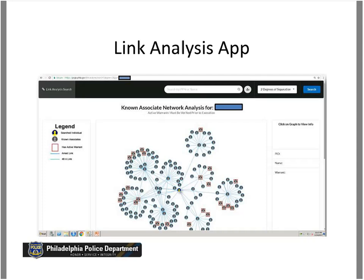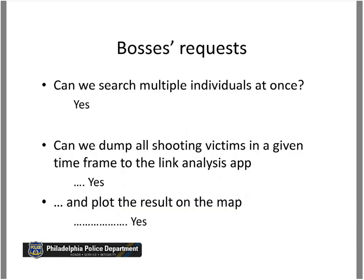The application also highlights individuals with active warrants — those individuals highlighted in red squares in the screen are those with active warrants. We developed this application about a year and a half ago. When we showed it to our bosses they got excited, but immediately some feedback came back — they wanted to take it to the next level. They wanted to search multiple individuals all at once, rather than typing names separately, and then they got crazier and wanted to see how all shooting victims in Philadelphia are connected.